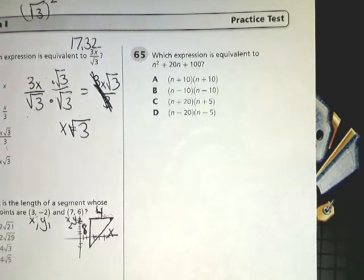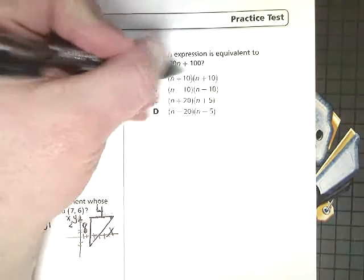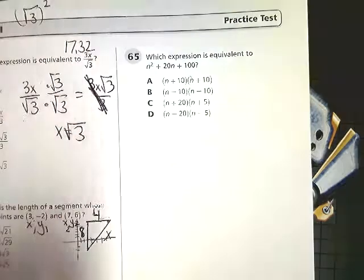N squared plus 20N plus 100. Now, when I look at this, when they want me to factor it out, which is what they're asking me to do, there's a couple ways I can go about it. Since it's a multiple choice test, you could always just redo the answer choices to try to find it.